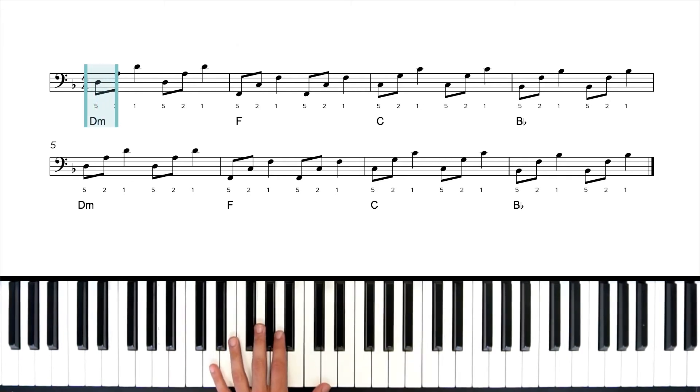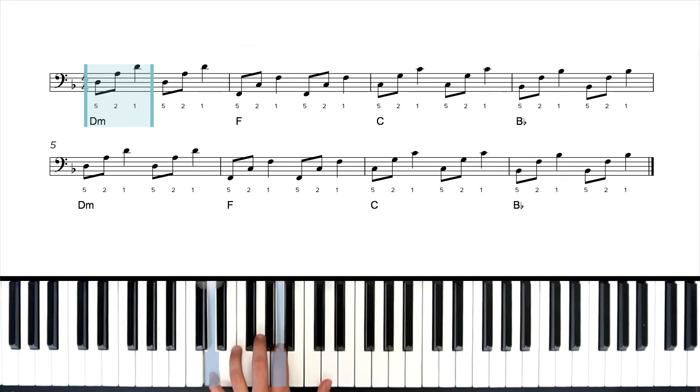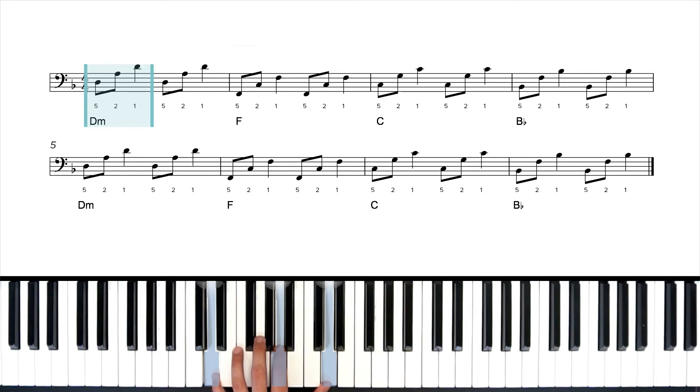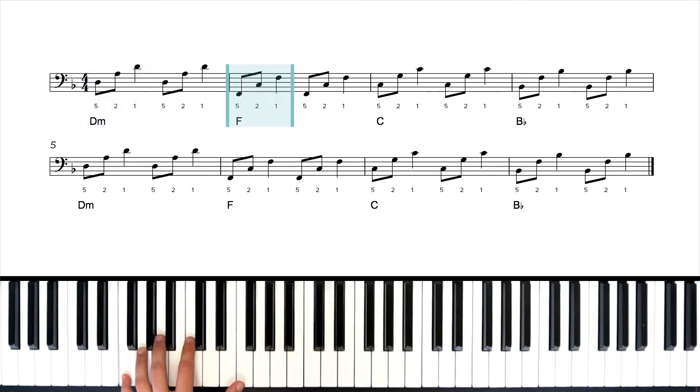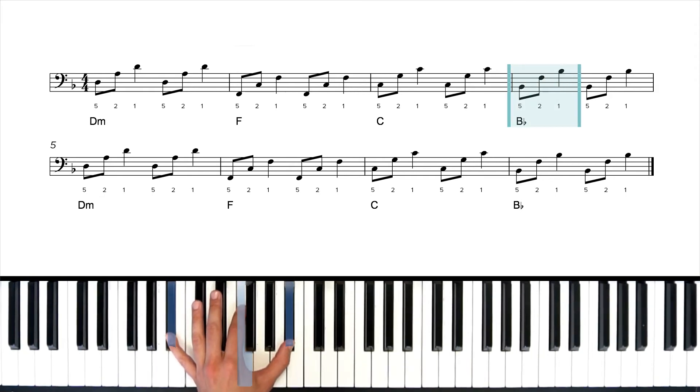Our first chord is D minor but we're gonna outline it in an octave position which means D and then its fifth which is A and then the high D an octave above. Five, two, one fingers. And we're gonna play eighth note, eighth note, quarter note and then we're gonna repeat that for the second half of that measure. Now we're gonna do the same pattern for each chord to come. So F major we're gonna drop down. F major is our second chord and we'll play F, C, F. Measure three we're gonna play C chord outline. So C, G, C. Now we're gonna drop down and slide our hand back towards the back of the keys for this fourth chord which is B flat because our fifth finger and our first finger need to be able to reach these black notes. That's why we slide back. Alright and that's it.